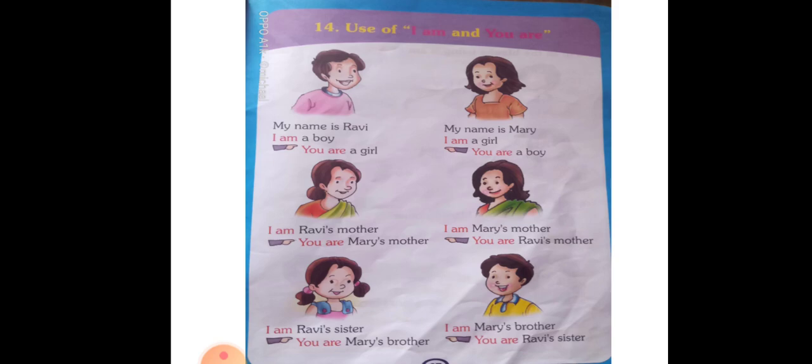This is all for singular. For your own, you will say I am. And for somebody else, you will say you are. Okay? Now children, this is enough for today. Try to read, practice, and do well. Bye for now. God bless.